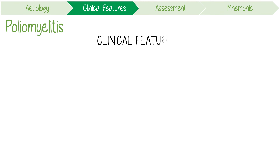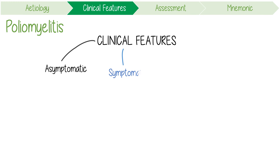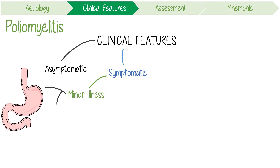The clinical features of polio vary significantly between patients. 90% of infections are asymptomatic, but even when symptomatic, the most common presentation is a minor illness with gastroenteritis and flu-like symptoms.